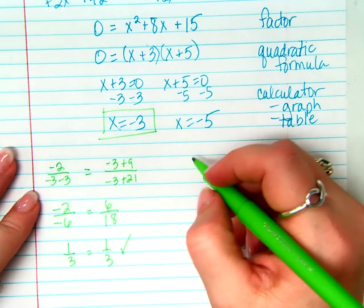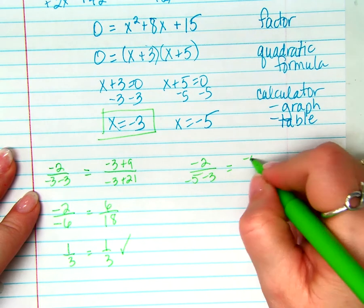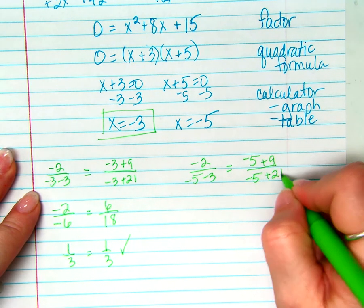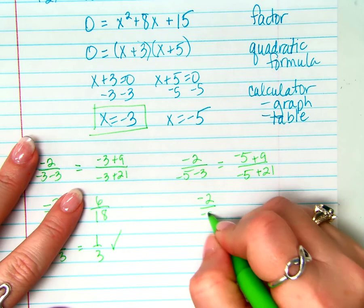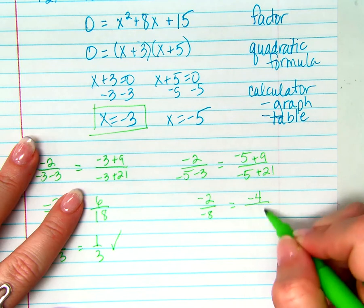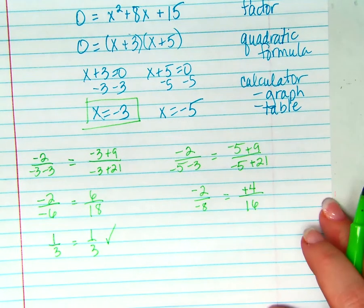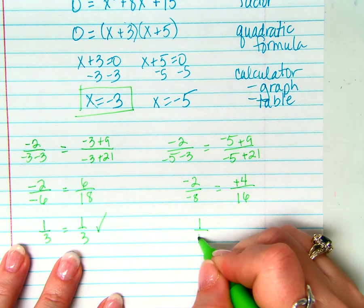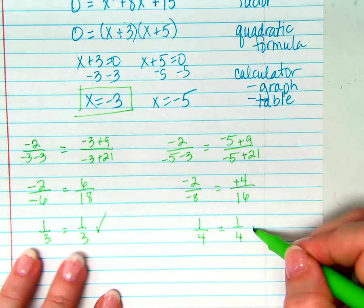Negative 5. Negative 2 over negative 5 minus 3 should equal negative 5 plus 9 over negative 5 plus 21. So that gives me negative 2 over negative 8, which should equal positive 4 over 16. Are those two fractions equal to each other? Because when you simplify them, you get 1 fourth equal 1 fourth. So does negative 5 work? Yes.